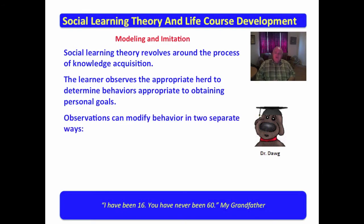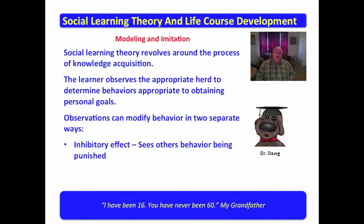Observations in social learning theory are said to modify behavior in two separate ways. They have an inhibitory effect — in other words, you see somebody do something and they get punished, then you really don't want to do that. I had a good friend many years ago who was all crazy about investing in derivatives. After he lost everything, I didn't want to invest in derivatives. I have a good friend who told his wife what for, and after his wife got through with him, I've learned to say yes ma'am and no ma'am. Certain behaviors that we observe inhibit us from following those pathways.